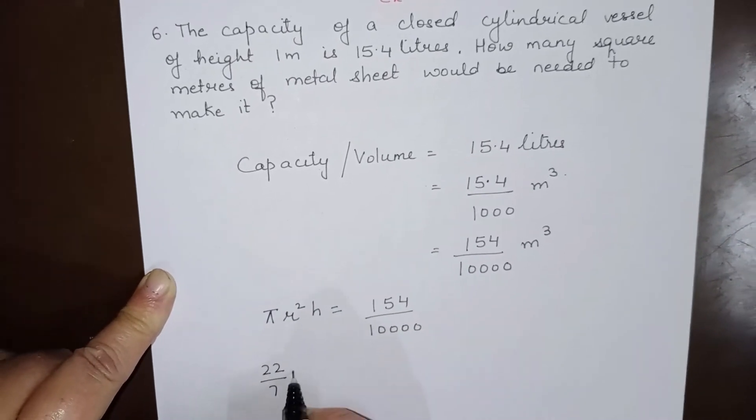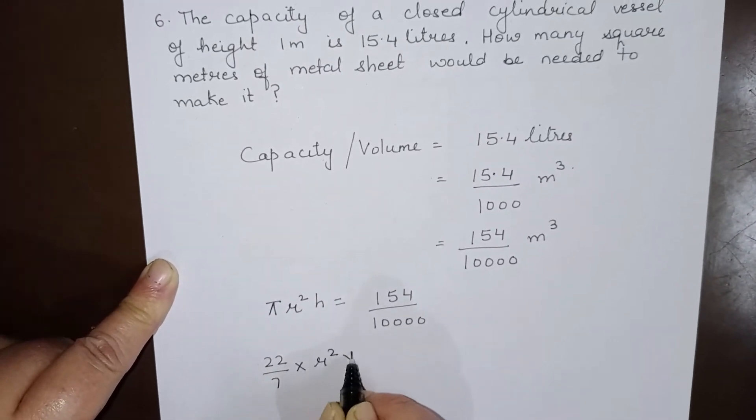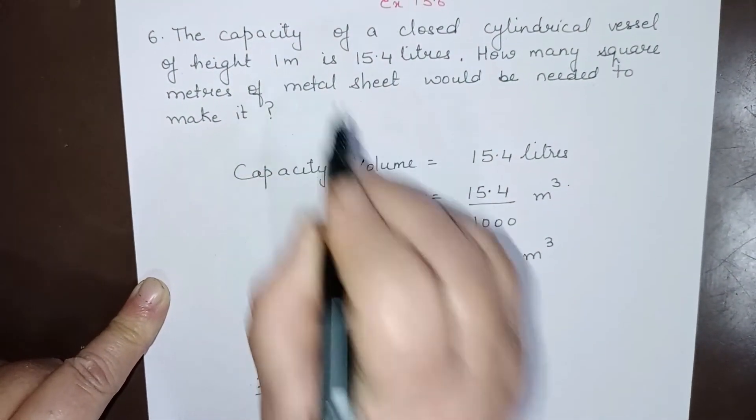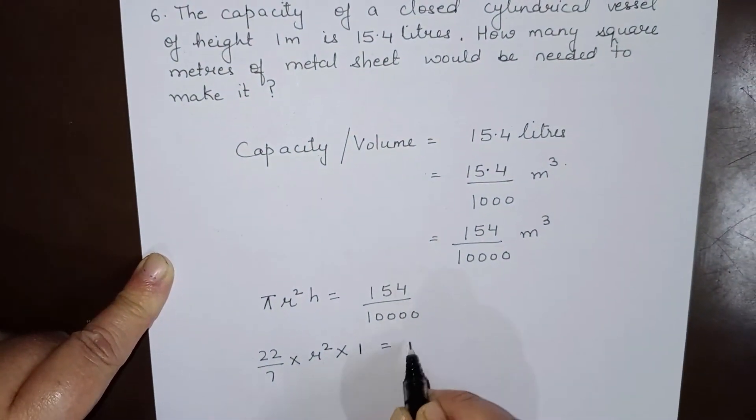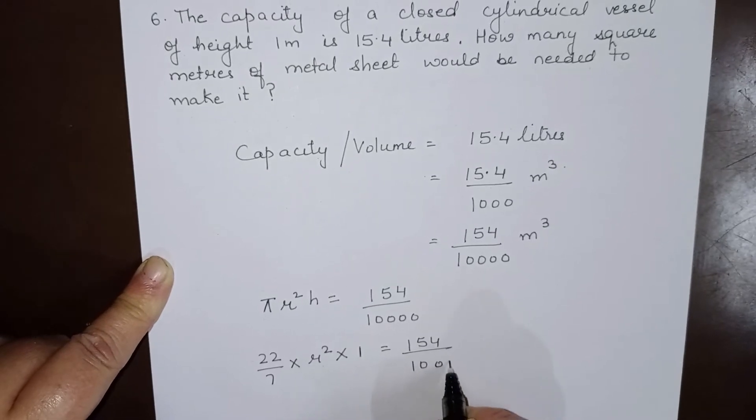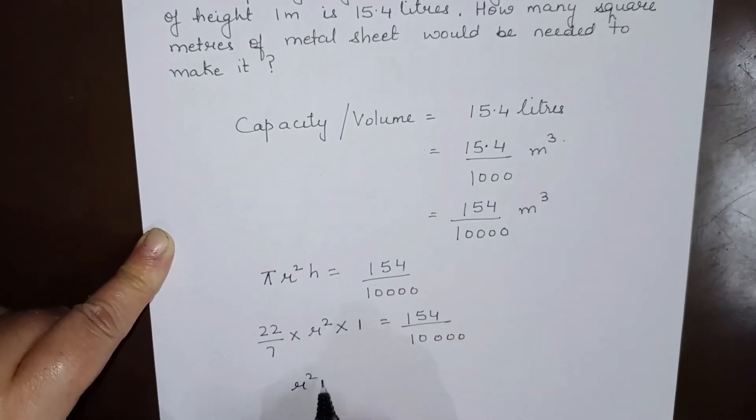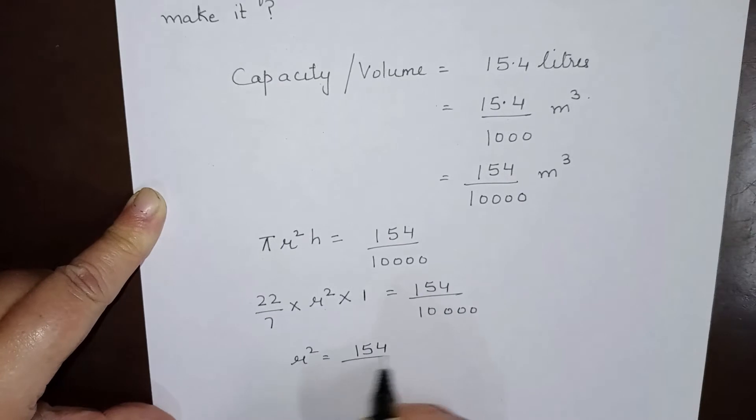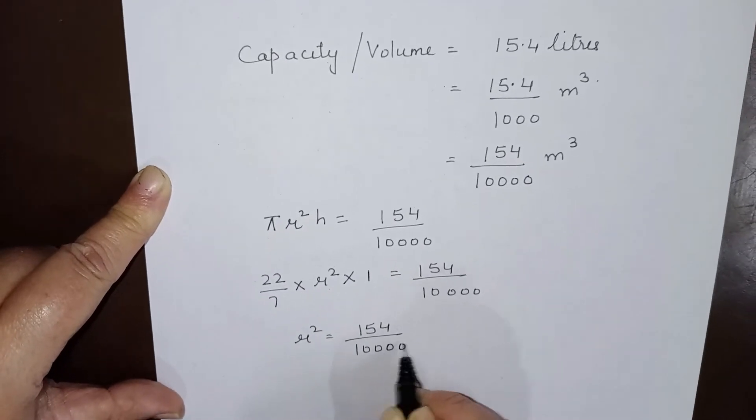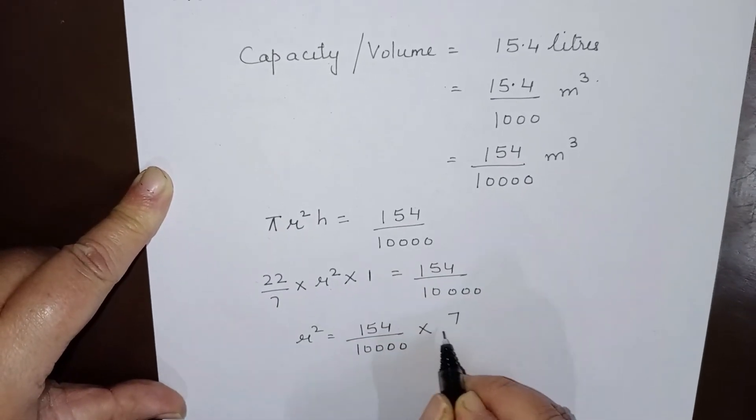22/7 times r² times height, which is 1 meter, equals 154 over 10,000. So r² equals 154 over 10,000 times 7 over 22.